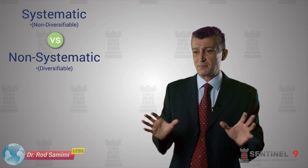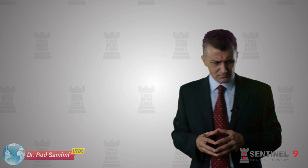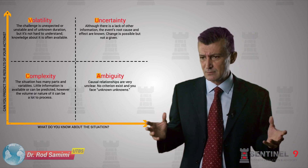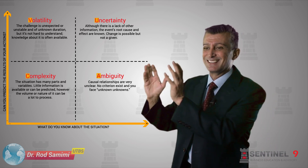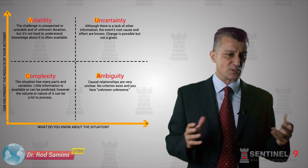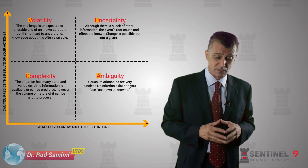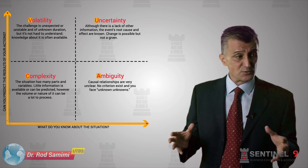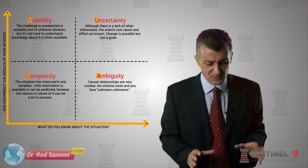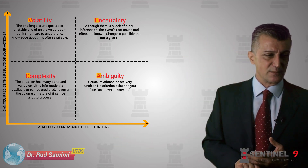How do we know something is systematic or non-systematic? How do we know whether we're stuck with it or can do something about it? There is a methodology well covered in the literature called VUCA — Volatility, Uncertainty, Complexity, Ambiguity. It was developed by the US military with scholars who consulted and worked for the military. It's one of the best methodologies around, and it says that if these four components are assessed, they show the degree of the risk.